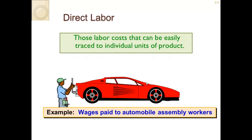When we talk about direct labor, we're talking about wages paid to the people who are working directly on the product. In a manufacturing setting for a vehicle, this would be assembly line workers — the person installing the tailpipe, the person installing the lights, the person putting the wheels on the vehicle. All wages paid to people directly working on the vehicle are included in direct labor.